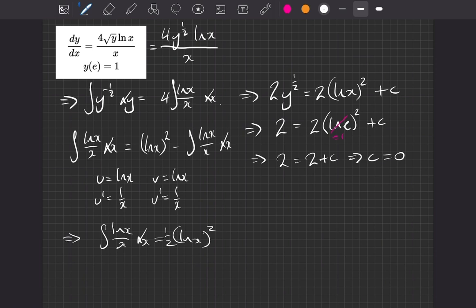So what we can do now then, we can take that value of c, and we can plug it into our general solution to get our particular one. So we're going to get 2 y to the half is equal to 2 ln of x squared. And our c is now 0, so it's just plus 0 at the end.